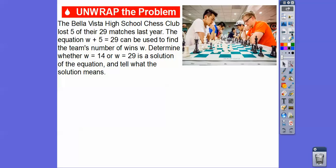So let's try one here. The Bella Vista High School Chess Club lost 5 of their 29 matches last year. The equation w plus 5 equals 29 can be used to find the team's number of wins. Determine whether w equals 14 or w equals 24 is a solution of this equation and tell what the solution means.